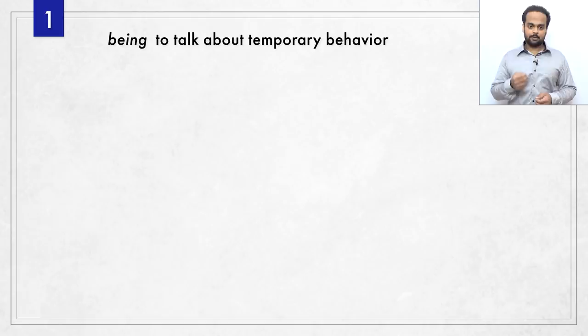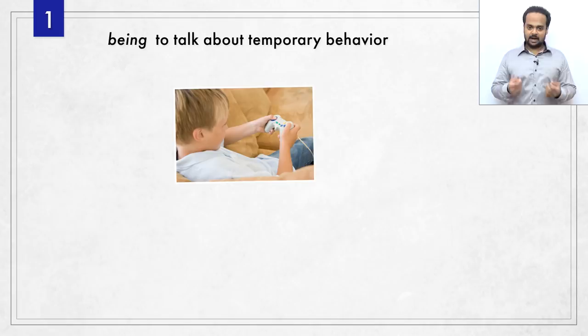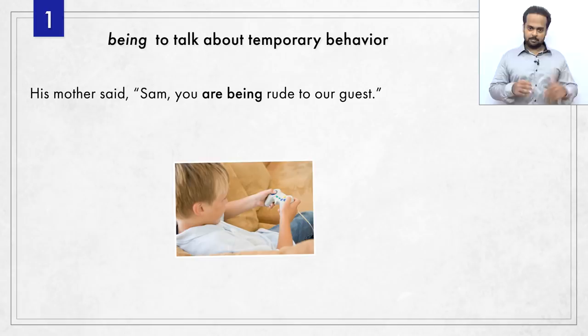The first use of being is to talk about a person's temporary behavior. Here's an example. I went to visit a friend of mine one time. He's married and has a son who's about seven or eight years old. When I went to their house, the boy was busy playing video games, so he didn't say hi to me. He didn't want to talk. He just wanted to keep playing. So his mother said this to him.